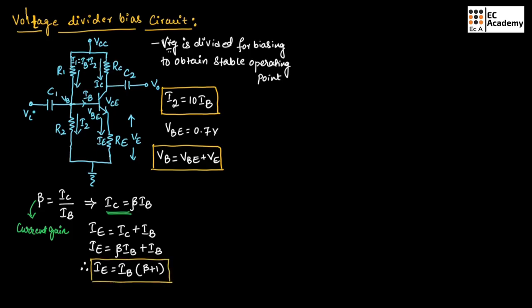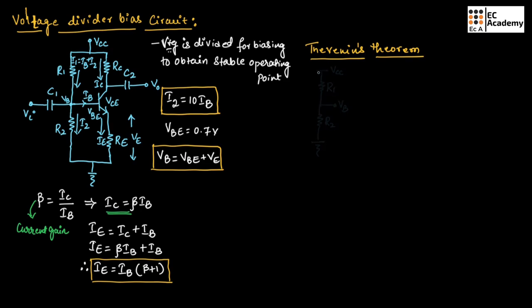You need to remember all these formulas, which are very important while solving problems. Now let us simplify this voltage divider bias circuit using Thevenin's theorem. Using Thevenin's theorem, we will simplify the input side. Here we have VCC, R1, and R2 connected to ground — this is the input side circuit which we need to simplify.